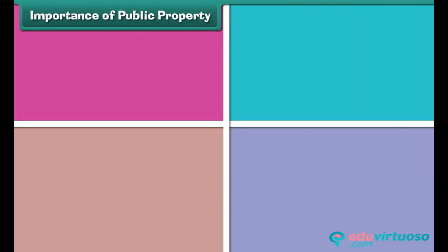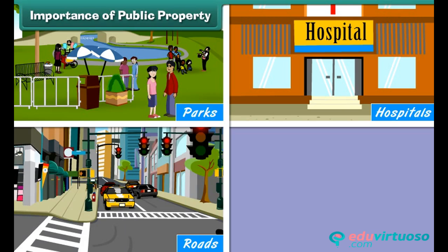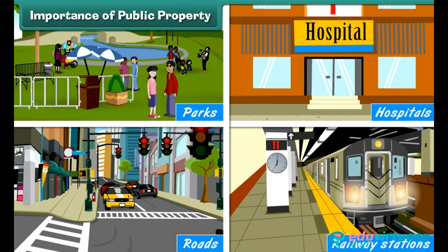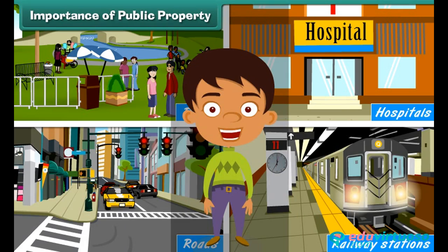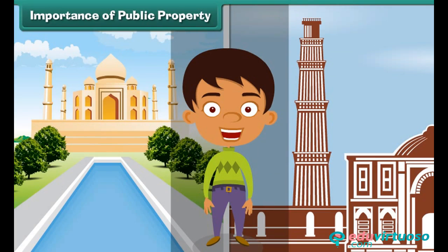Public properties like parks, hospitals, roads, railway stations, etc. are for public welfare and provide comfort and convenience to the public. Some public properties like historical monuments showcase the glorious history of a country. They are the pride of a nation.